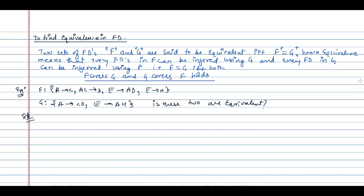What do you mean by F covers G? F covers G means every functional dependency in G can also be determined by the functional dependencies in F. Or equivalently, there is nothing in G which cannot be determined in F. Similarly, G covers F means everything in G can also be determined using F.